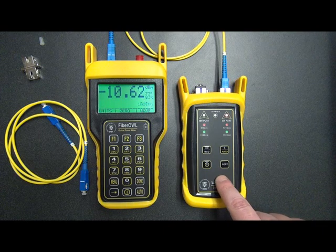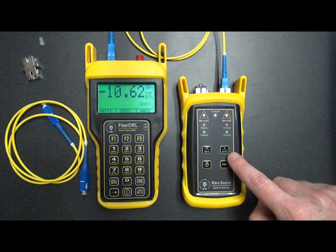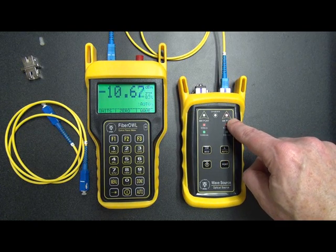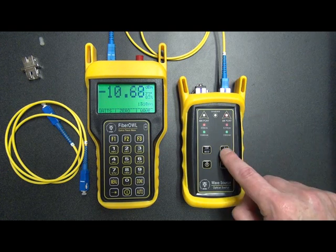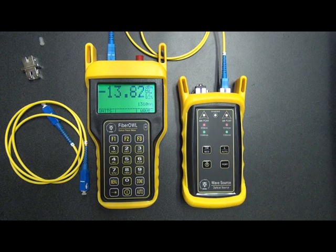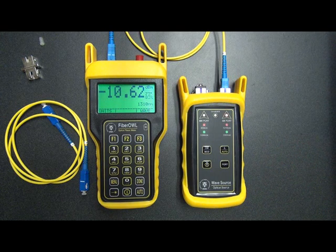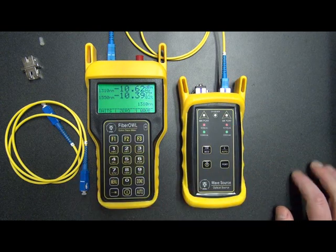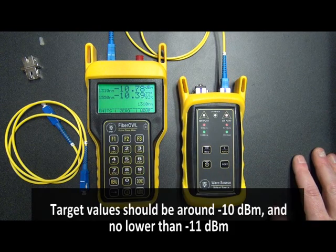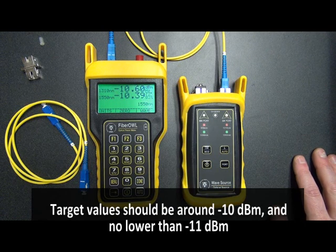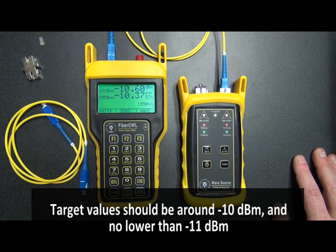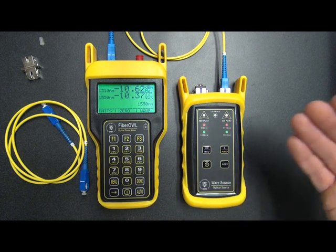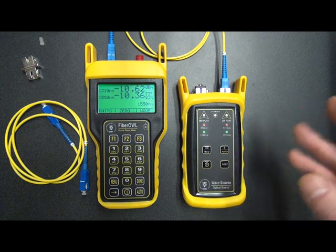So we need to set the wave source into auto mode as well. This is done by pressing and holding the auto button, watching the indicator LED, and the second it starts flashing, we remove our finger. We'll watch it for a few seconds and it should begin switching between red and green. We should also see a reading on the screen here. We'll see that 1310 has a reading of minus 10.6, 1550 is minus 10.37. So these are both acceptable power levels. We're not below minus 11, we're still around minus 10.